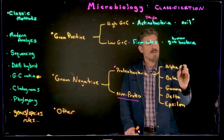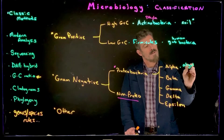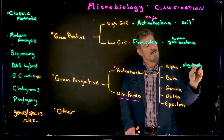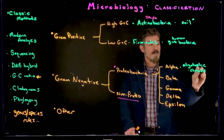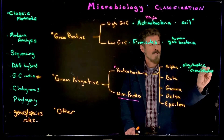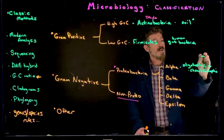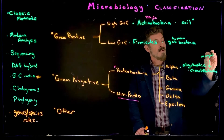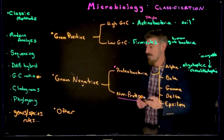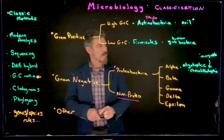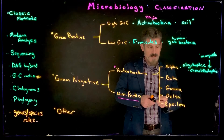The alpha-proteobacteria are oligotrophic — also called chemolithotrophic. Essentially, they don't need a lot of nutrients, and they can get energy from inorganic sources. We tend to find these a lot in the environment.